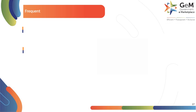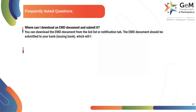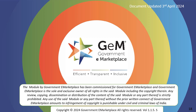Here are the frequently asked questions. Where can I download an EMD document and submit it? You can download the EMD document from the bid list or notification tab. The EMD document should be submitted to your bank, the issuing bank, which will then notify the advisory bank provided by the buyer on what amount EMD is applicable. If the estimated bid value is above 5 lakh rupees, this is applicable for both products and services. Thank you.